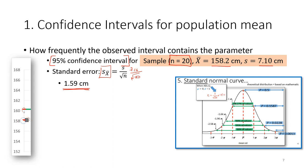Our sample mean is 158.2. What we need is to have a 95 percent confidence interval, so we need to construct an interval. Just imagine: the green color here is our population mean which in most cases we don't know. The sample mean is 158.2. If the confidence interval stops short of the population mean, then the population mean does not fall in the 95 percent confidence interval for this sample. But if the confidence interval extends to include the population mean, then it contains the population mean.